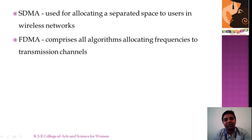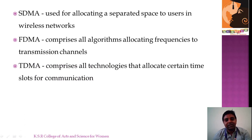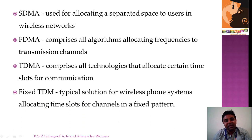FDMA comprises all algorithms allocating frequencies to transmission channels. In TDMA, time is divided into certain slots and allocated for different users. Fixed TDM, used mainly in wireless phone systems, uses allocation of time slots in a fixed pattern.